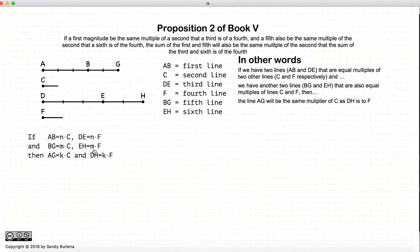And the proposition states that if these two conditions hold, the sum of AB and BG will be an equal multiple of C as DH is of F.